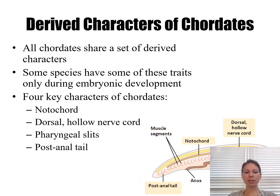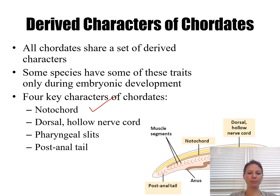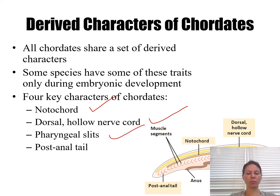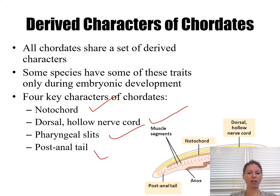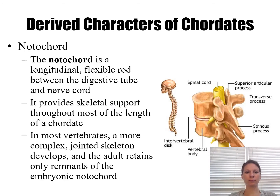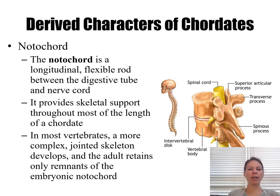The derived characters that all chordates have are: a notochord, which is the predecessor to a backbone; a nerve cord, the predecessor to the spinal cord; pharyngeal slits, which become gills in some animals; and a post-anal tail, which means the tail extends past the anus.